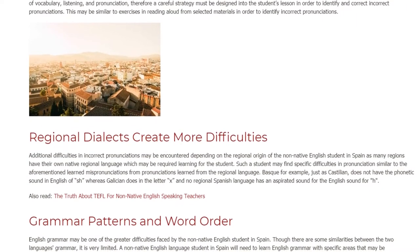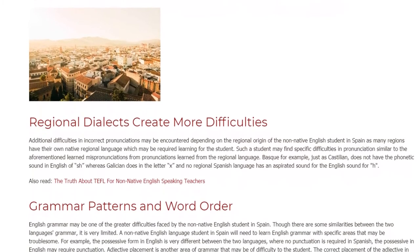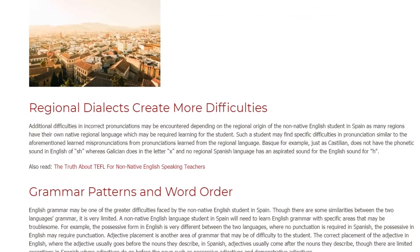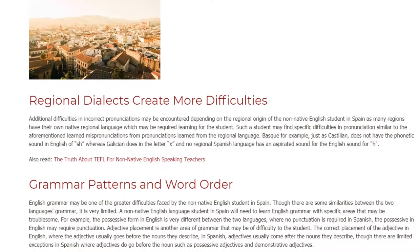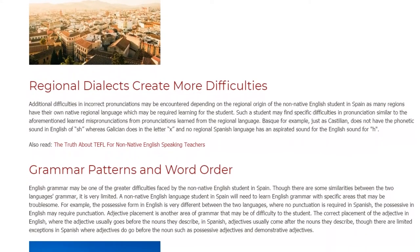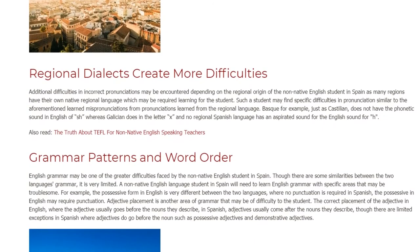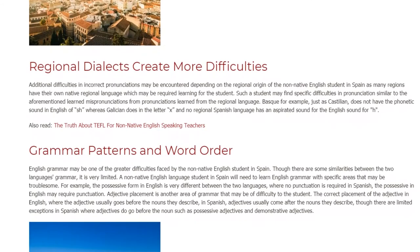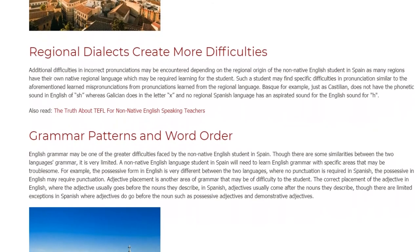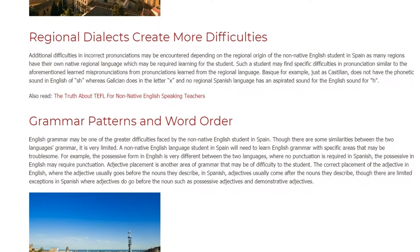Regional Dialects Create More Difficulties. Additional difficulties in incorrect pronunciations may be encountered depending on the regional origin of the non-native English student in Spain, as many regions have their own native regional language which may be required learning. A student may find specific difficulties in pronunciation from pronunciations learned from the regional language. Basque and Castilian, for example, do not have the phonetic sound 'SH' found in English, whereas Galician does in the letter X, and no regional Spanish language has an aspirated sound for the English 'H.'